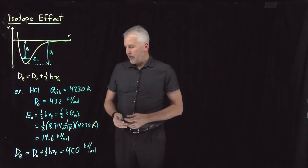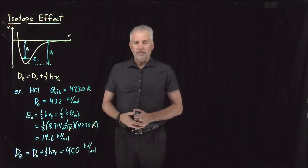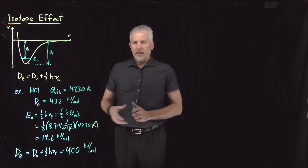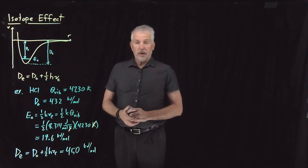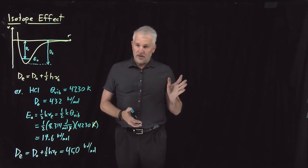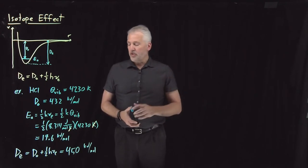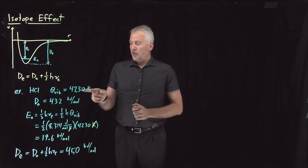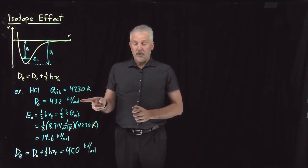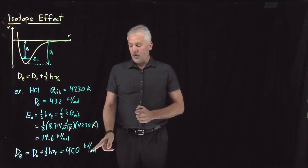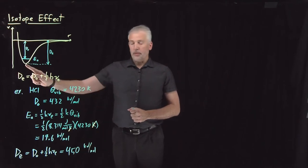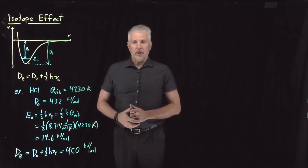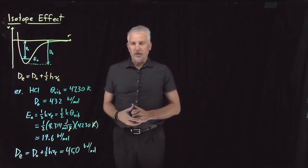So when you go to look up a bond dissociation energy from a table, be sure you know whether you're looking up D naught — the dissociation from the ground state — or D sub e — dissociation from the equilibrium position at the bottom of the well — because they can be substantially different.